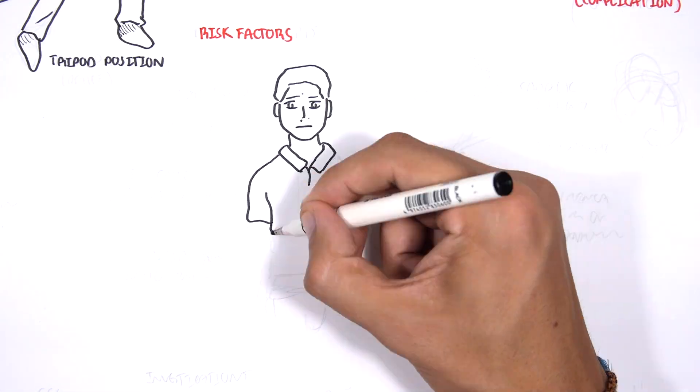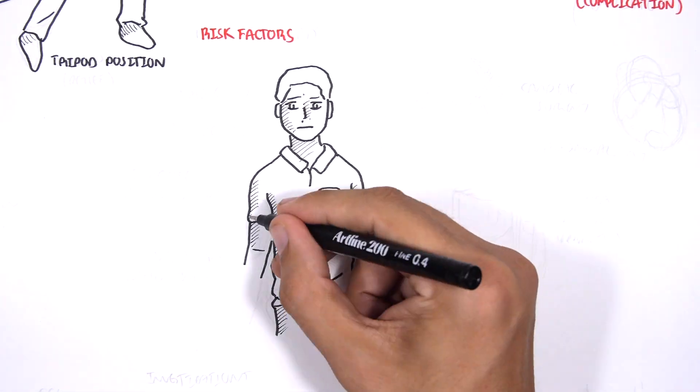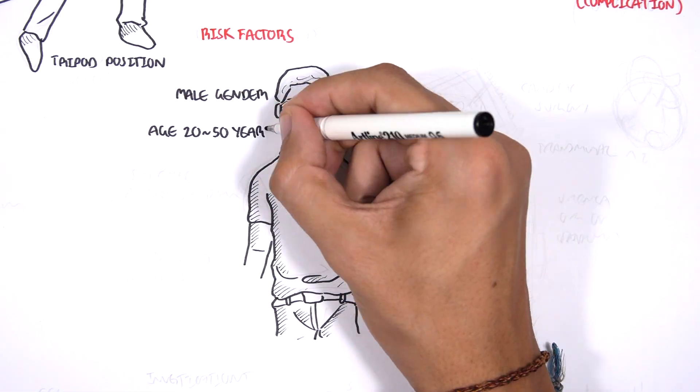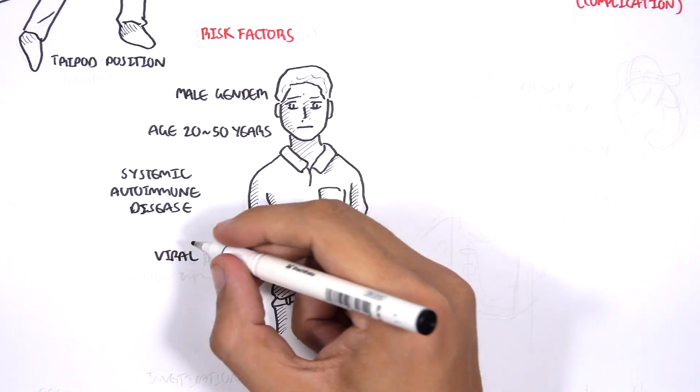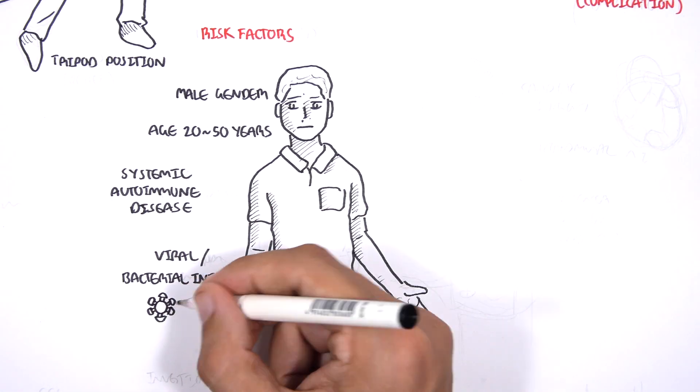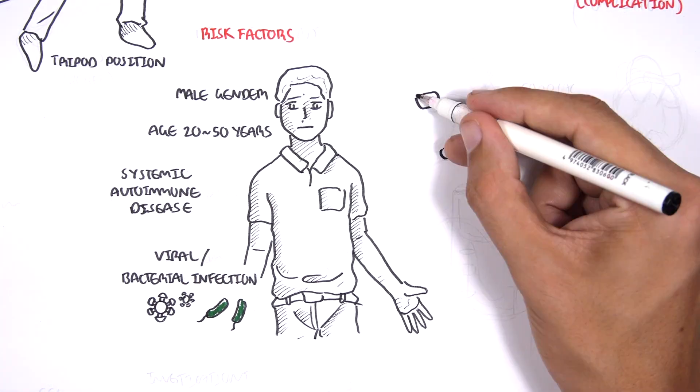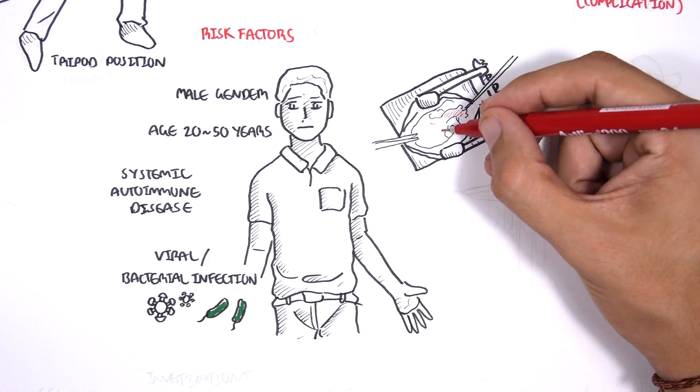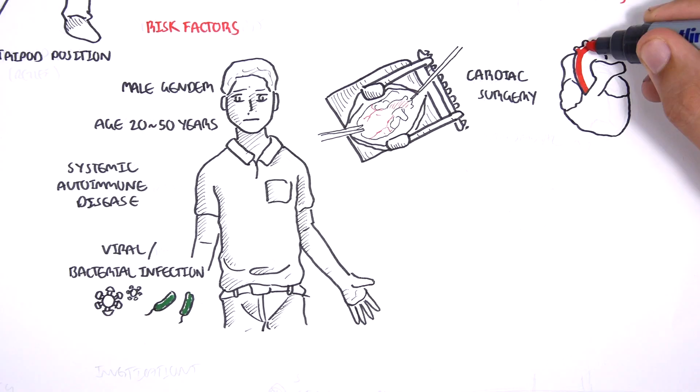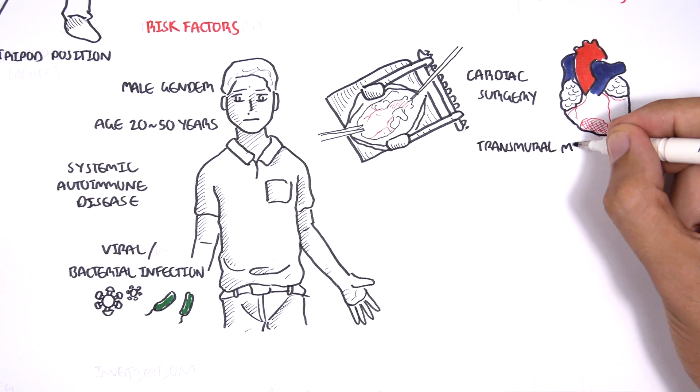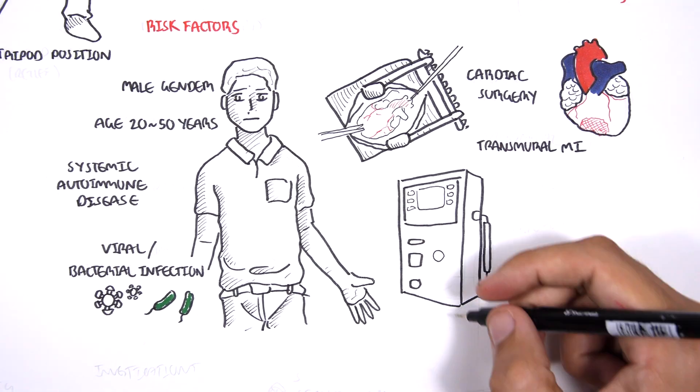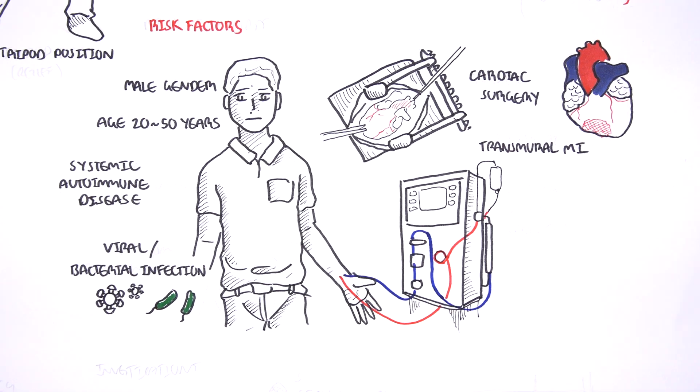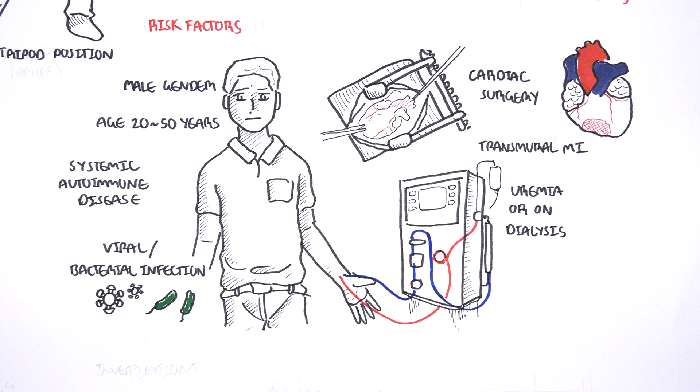Risk factors: male gender, age between 20 to 50, systemic autoimmune disease, having a viral and bacterial infection, past and recent cardiac surgery, having had a transmural myocardial infarction, and having uremia or being on dialysis.